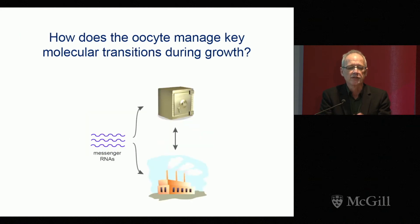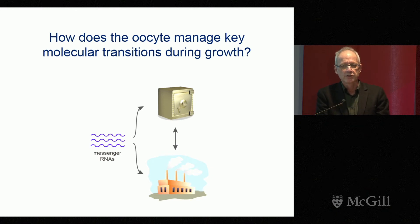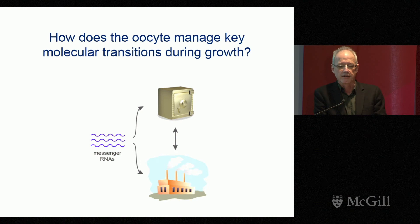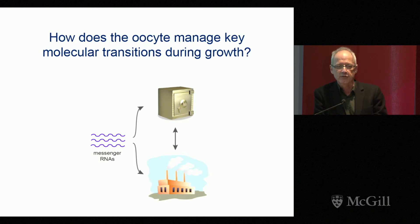Secondly, we're interested in knowing how the oocyte manages key molecular transitions during its growth. What we focus on are messenger RNAs. It's known that the oocyte makes a large number of messenger RNAs, some of which are used right away to make proteins, others of which are stored away to be utilized later. Our interest is in understanding how the oocyte makes the decision whether to send a particular messenger RNA straight to the factory or to put it in the safe until later.